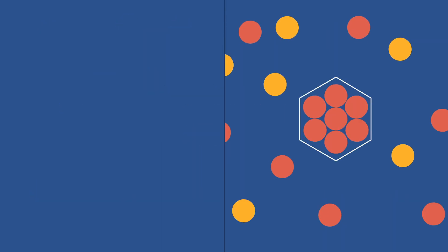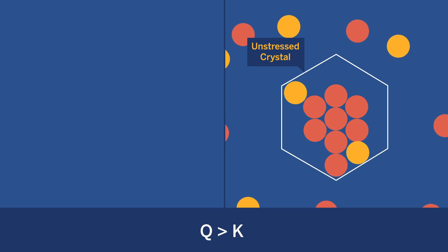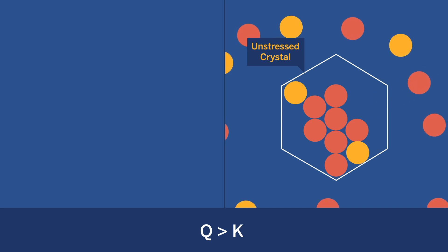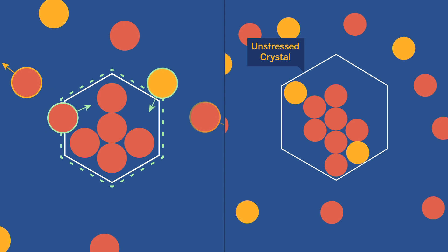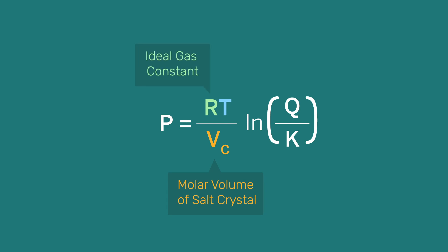This solution is supersaturated for an unstressed crystal so that Q is larger than K, implying that an unstressed crystal would grow in such a solution. The supersaturation Q over K in equilibrium with a stressed crystal is related to the applied pressure P and is given by RT over VC times the natural logarithm of Q over K, where VC is the molar volume of the salt crystal, R is the ideal gas constant, and T is the absolute temperature.